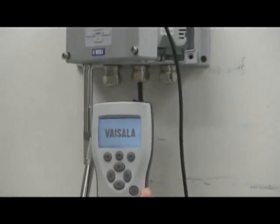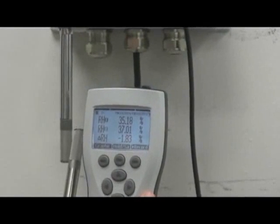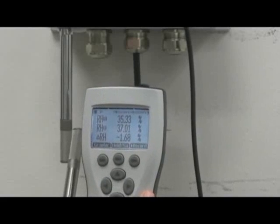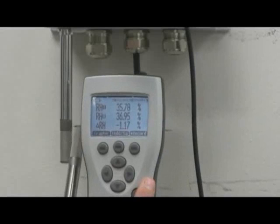Step 2. Power on the HM70 handheld and you will see three humidity readings appear on the display: the handheld probe, the fixed mount transmitter, and the difference between the two.